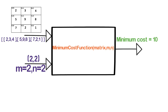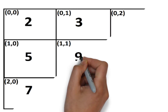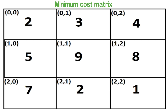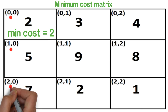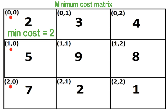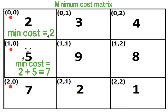The approach is to calculate the minimum cost to reach each cell. For the first cell 0,0, the minimum cost is the value of the cell itself. Next, we calculate the minimum cost for each cell in the first column. To reach cell 1,0 there is only one way — downwards — so the minimum cost is 2 plus 5, which equals 7.